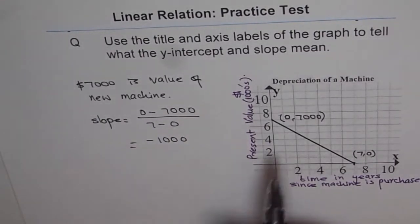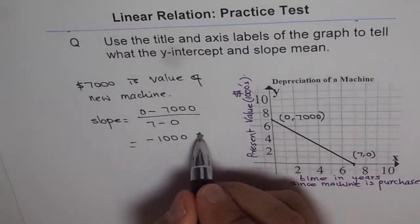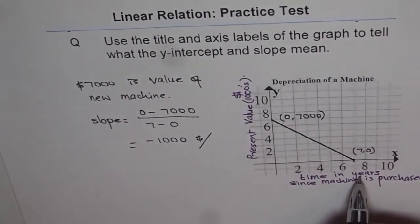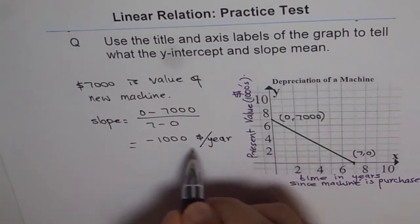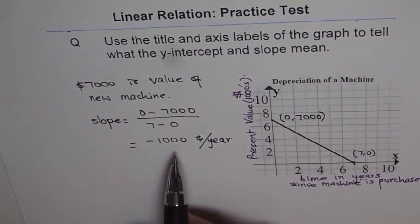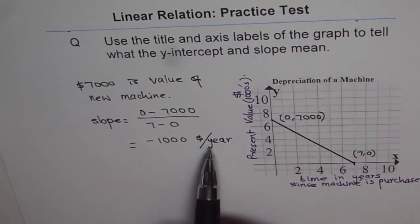And the units are dollars per year. So that is the depreciation rate, the value by which the machine is decreasing every year.